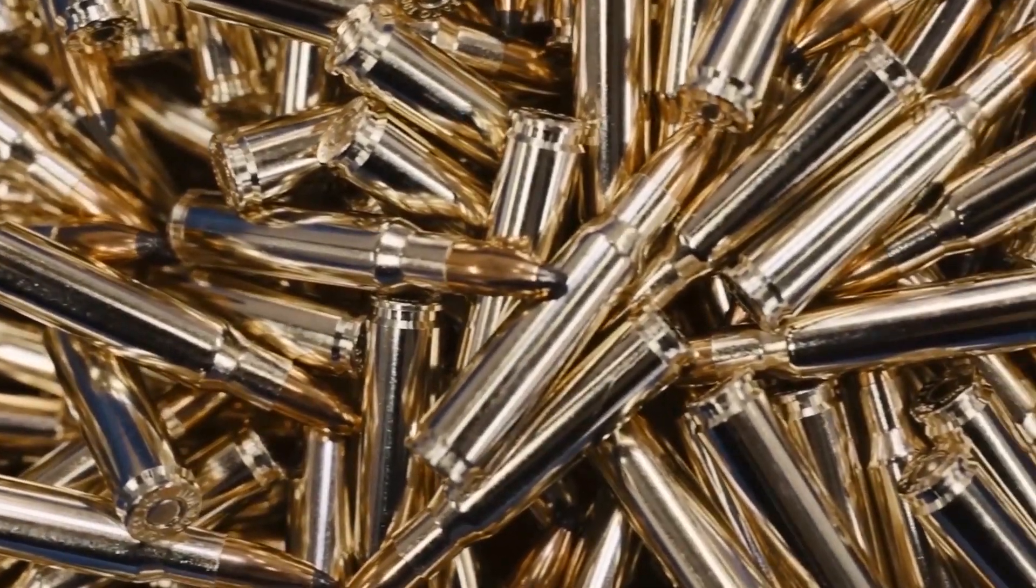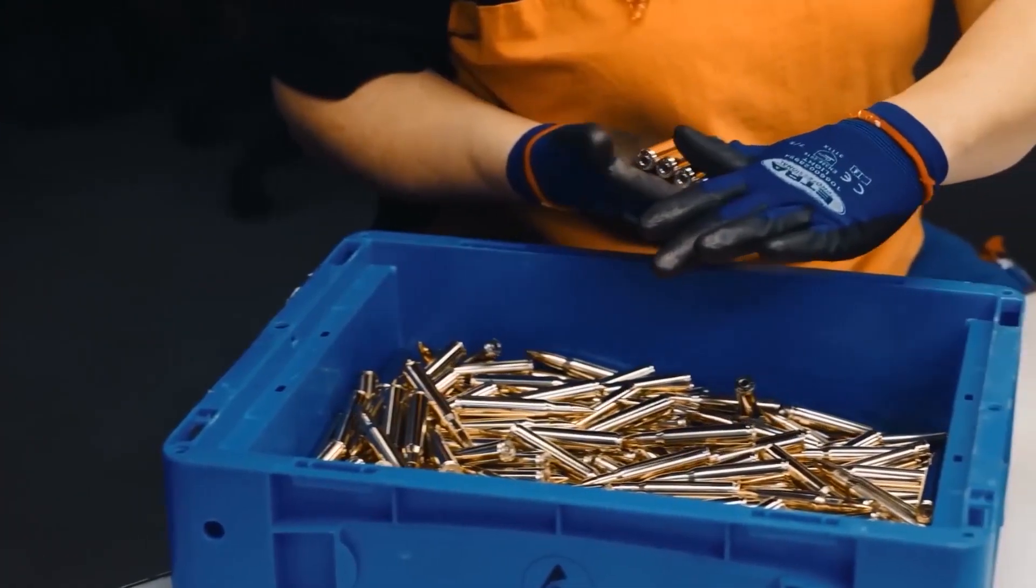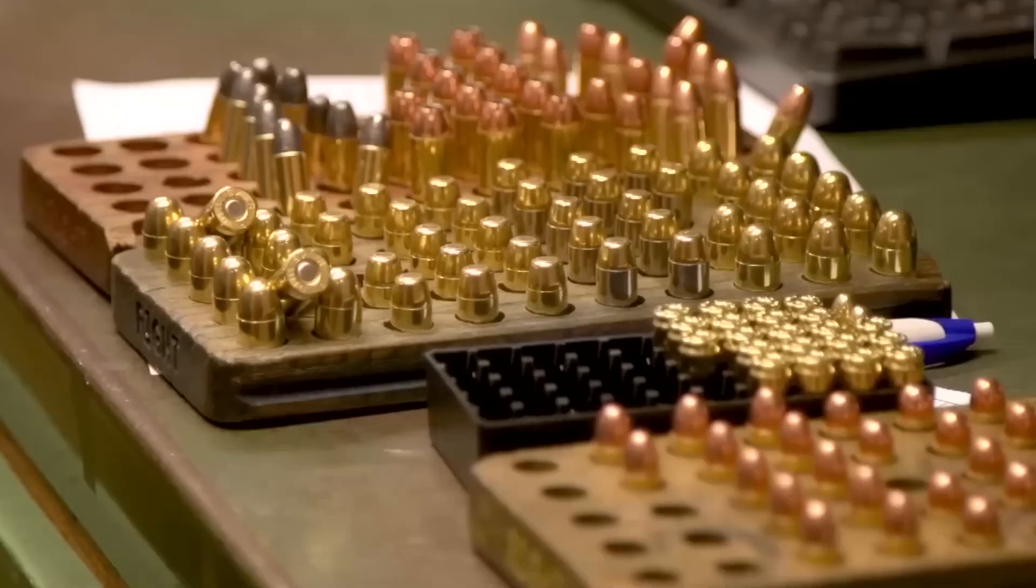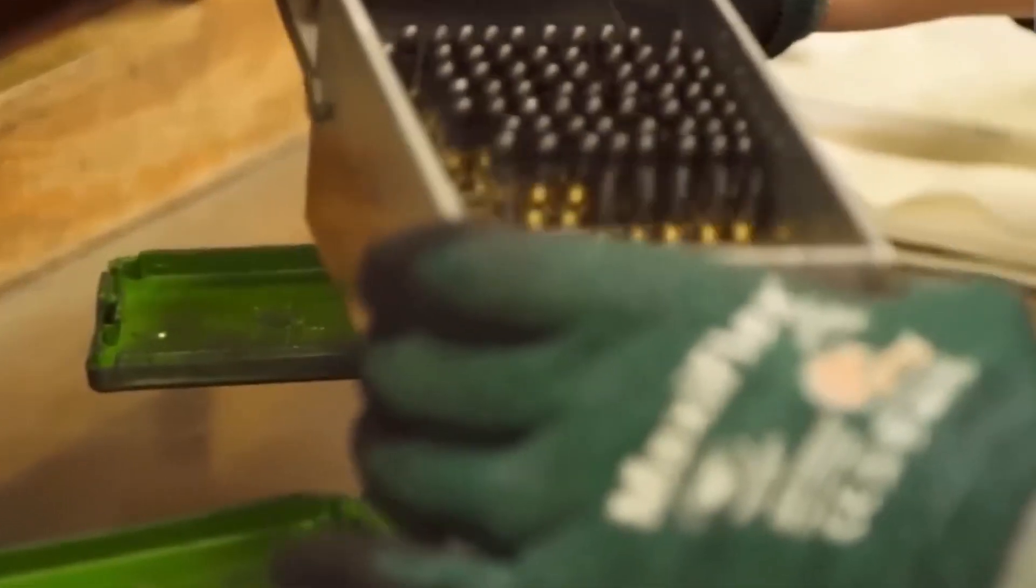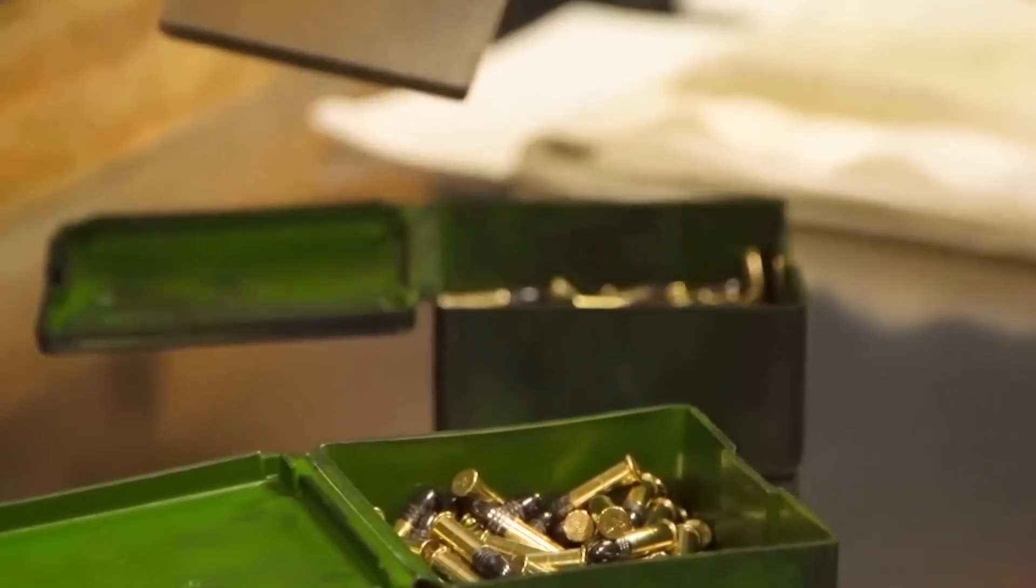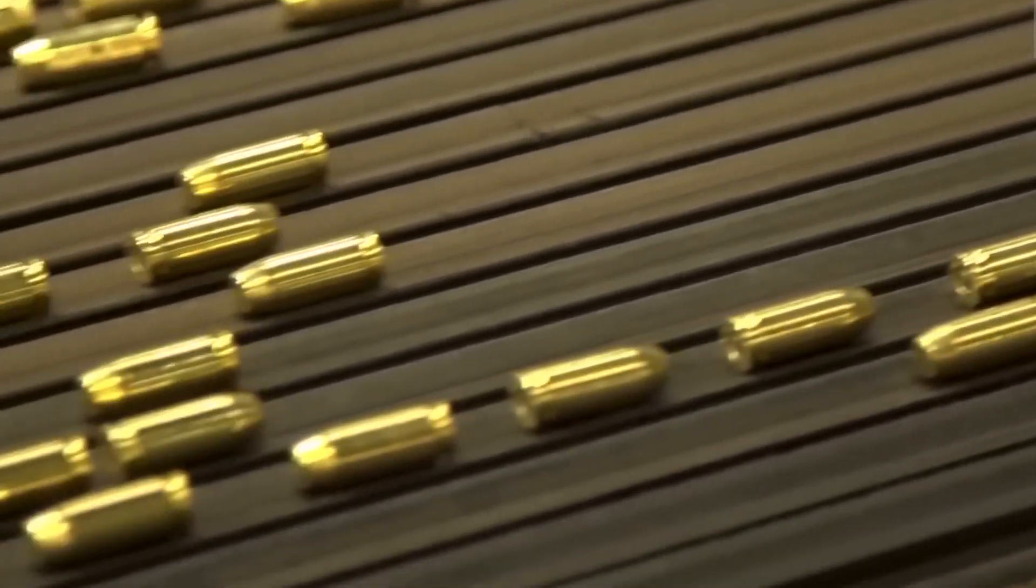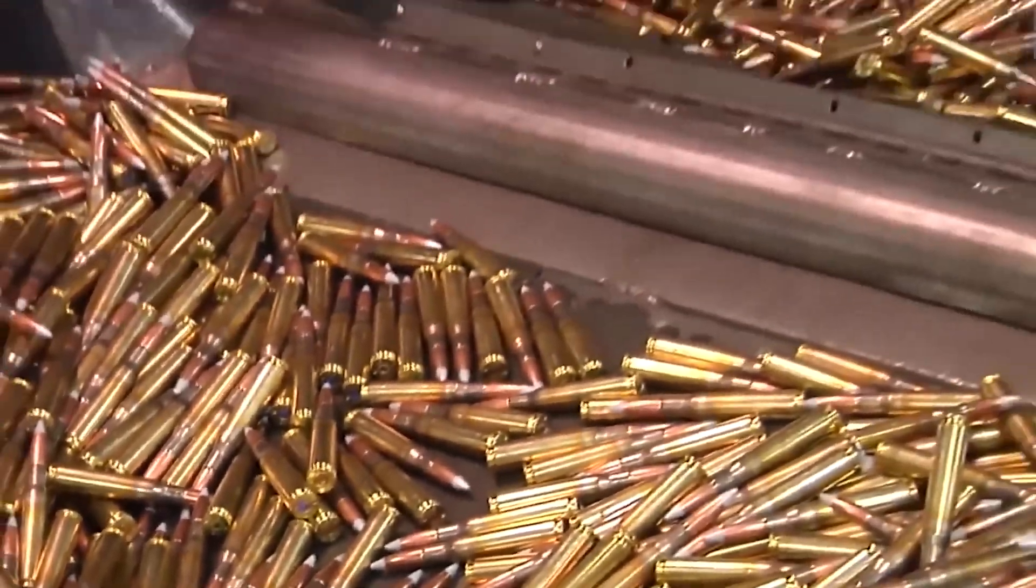Quality control continues throughout assembly. Sophisticated sensors verify primer seating depth, powder charge weight, and overall cartridge length. Random samples undergo additional testing for headspace dimensions, bullet pull force, how firmly the bullet is seated, and other critical specifications.